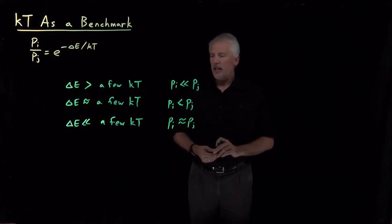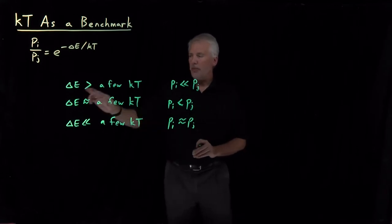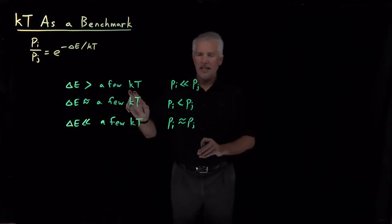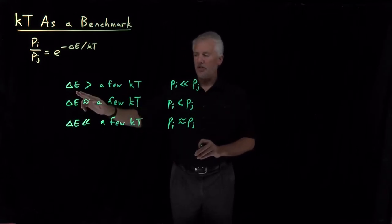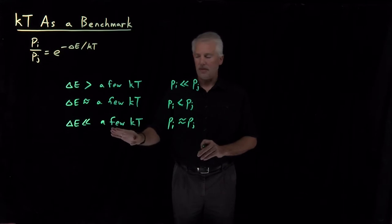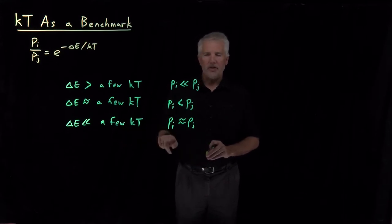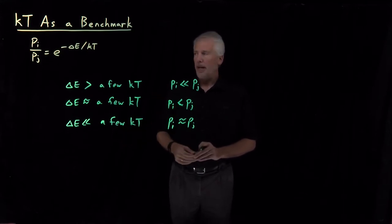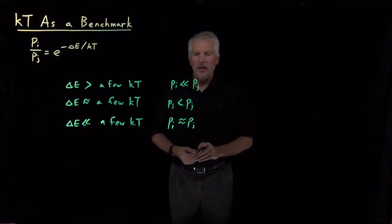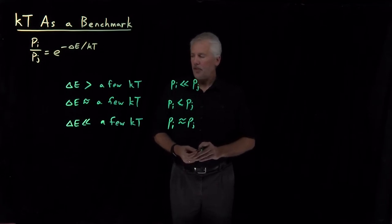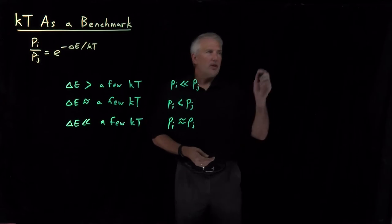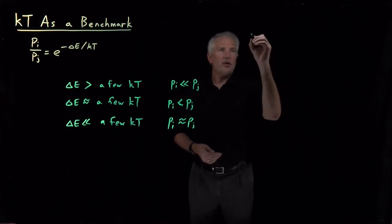So that tells us immediately — if we just know how many kT's this difference in energy is, whether it's a few, many, or a tiny fraction of kT — that immediately tells us something qualitative about how populated these two states are. In order to use that, however, we need to know what the value of kT is.